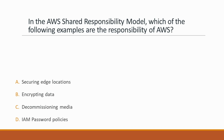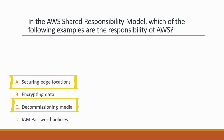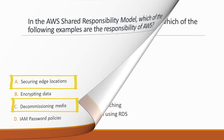Next question: In the AWS shared responsibility model, which of the following are the responsibility of AWS? Options: A. Securing edge locations, B. Encrypting data, C. Decommissioning media, D. IAM password policies. Correct answers are option A, securing edge locations, and option C, decommissioning media, because it is AWS's responsibility to decommission the media and also to secure edge locations.